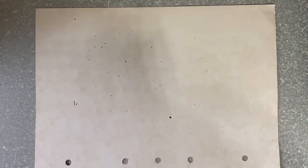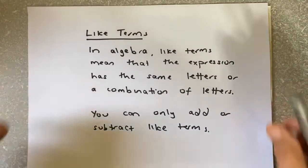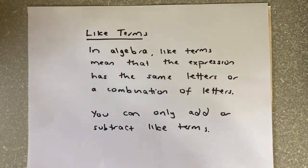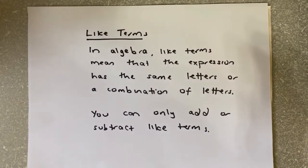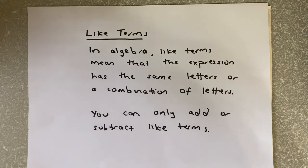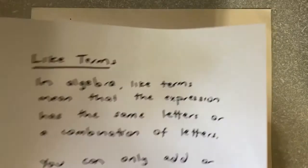Now we're going to look at how to add and subtract algebraic expressions. Before we do that, we need to know what like terms means. In algebra, like terms means the expressions have the same letters or combination of letters. In other words, you can only add and subtract when the terms are like. Let's look at some examples.